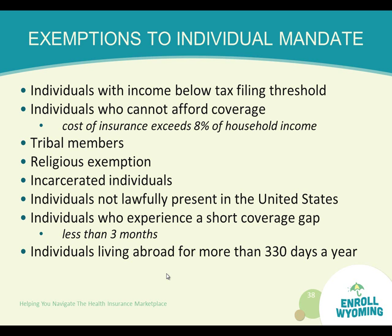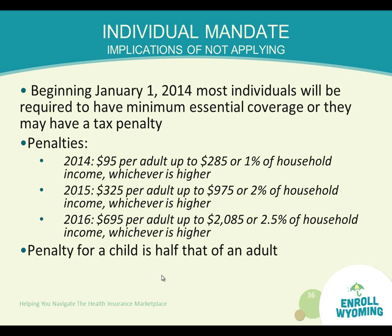Even though there are exemptions, it doesn't mean these individuals shouldn't look into having insurance in place. How much will this cost if you don't obtain insurance? In 2014, it will be $95 per adult, up to 1% of household income, capping at $285. A child is half the adult fee. By 2016, it increases to $695 minimum per adult, up to 2.5% of household income, capping at $2,085.